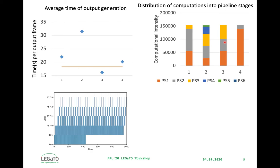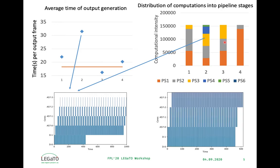Let's look at the worst case. In the worst case, we get a completely imbalanced pipeline, which yields a delayed execution. This is also reflected in an imbalanced distribution of computations. In the best case, which is better than the baseline, we get an almost balanced pipeline, which is also reflected in the balanced distribution of computations.